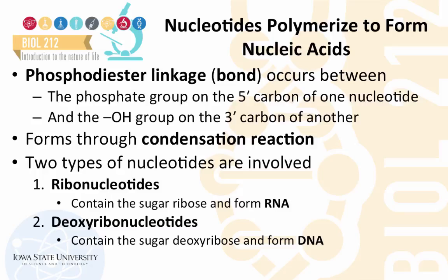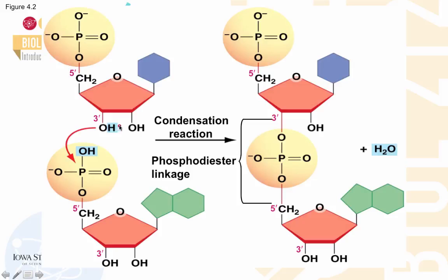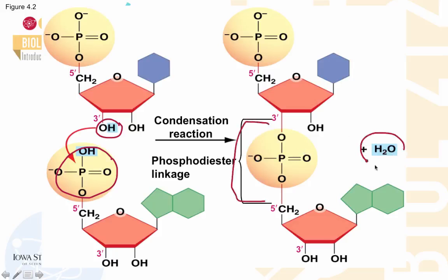There are two types of nucleotides involved in the process: ribonucleotides in the case of RNA, and deoxyribonucleotides in the case of DNA. During the condensation reaction, the 3' hydroxyl group of one nucleotide combines with the 5' phosphate on the second nucleotide to form a phosphodiester linkage with the release of a water molecule.